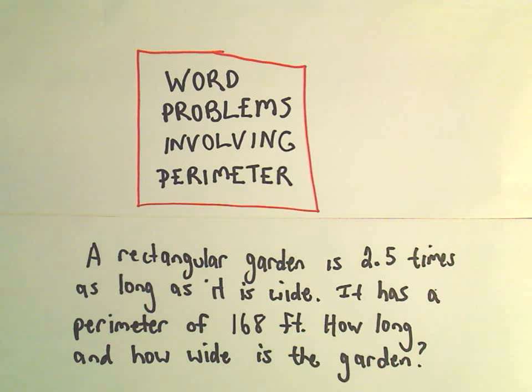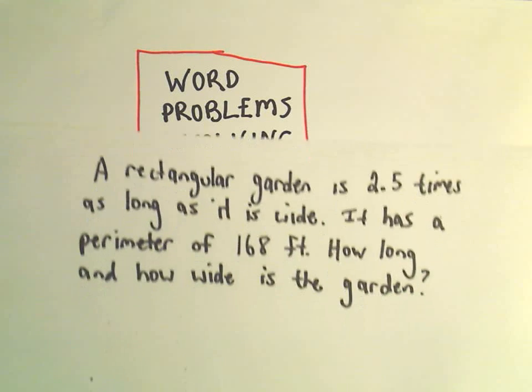Alright, in this video I want to do an example of a word problem that involves perimeter. And in this problem, we're going to have a little rectangular garden, and it's going to be 2.5 times as long as it is wide. If we know that it has a perimeter of 168 feet, we want to know just the dimensions. How long and how wide is the garden?